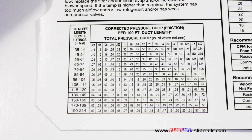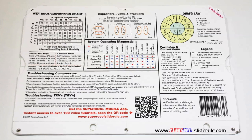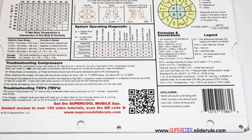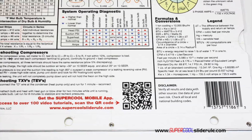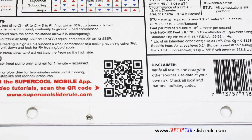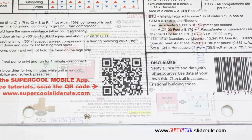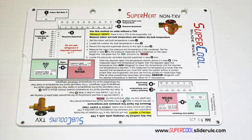It has pressure drop multipliers for ductwork as well as recommended velocities. Scanning this QR code gives instant access to over 100 tutorials to assist the technician with every test and repair imaginable. You owe it to yourself as well as your customers to own this tool. It's less than $20 including shipping.